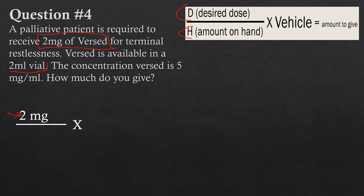Versed is available in a 2 milliliter vial — this part is completely not relevant. It doesn't matter how much medication is in the vial; it could be a 30 mL vial or a 50 mL vial. What matters is the concentration: Versed is 5 milligrams per mL. So the amount we have on hand is 5 milligrams, and the vehicle — how you'd deliver those 5 milligrams — is 1 milliliter. The concentration is what matters, not the vial size.